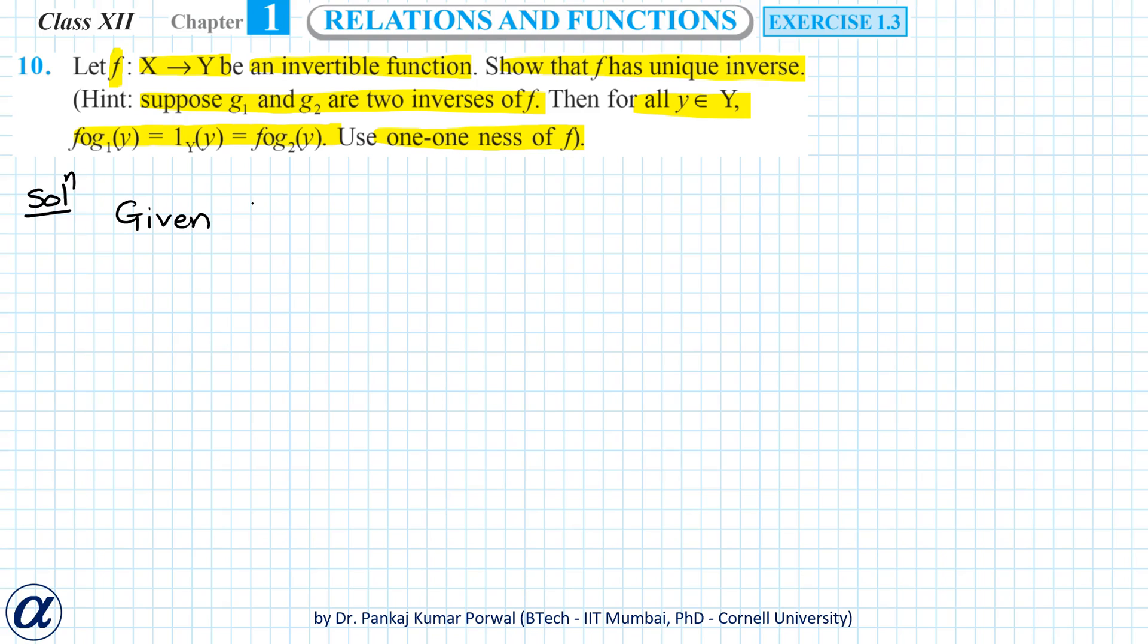This implies that f is both one-one and onto. Now let's assume that g1 and g2 are two inverses.